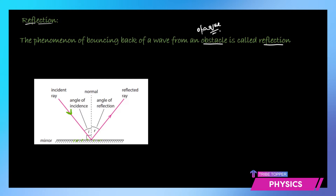This incident ray gets reflected on to the other side — this is the reflected ray. You should also know that a line which is drawn perpendicular to the mirror, this straight line, is called the normal.